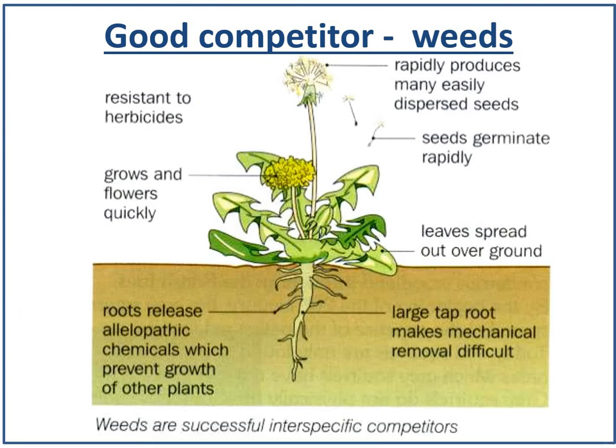Looking at what makes a good competitor in plants: weeds are very good competitors because they rapidly produce many easily dispersed seeds that germinate rapidly, are fairly resistant to herbicides, grow and flower quickly, have leaves that spread out over the ground, have large tap roots making them difficult to remove, and their roots release allelopathic chemicals that prevent the growth of other plants. So weeds are very successful interspecific competitors.